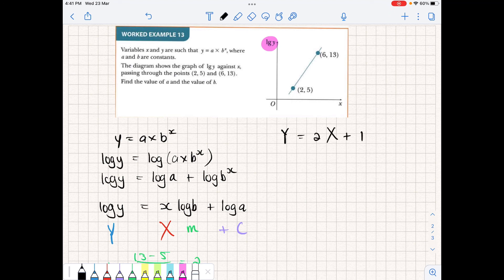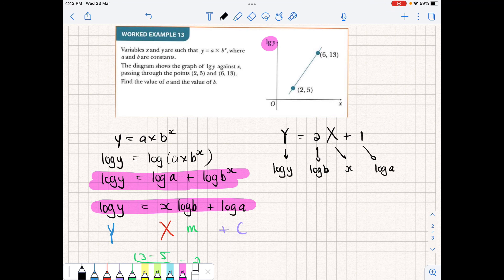So we can finish off by writing our linear equation, which is Y = 2X + 1. Okay, and now we're going to compare our non-linear equation to our linear equation. So if we have a look when we convert it here, this is what we got. So we're going to compare the two equations together. So Y is represented by log of y, 2x, so 2 is the gradient, and the gradient in our equation was log of b. x was just x, and 1 was c, and c was represented by log of a. So by equating the two, we can find the values of b and a.